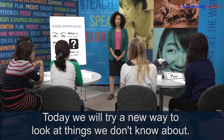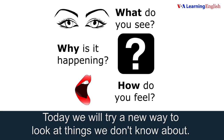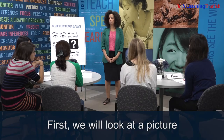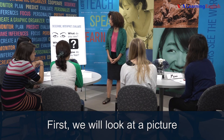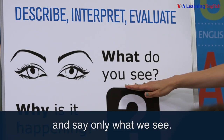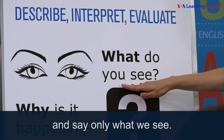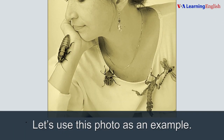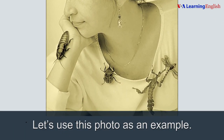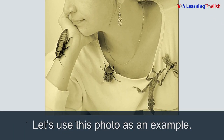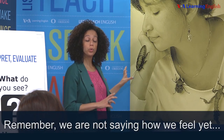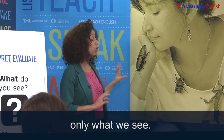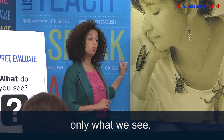Today we will try a new way to look at things we don't know about. First, we will look at a picture and say only what we see. Let's use this photo as an example. Remember, we are not saying how we feel yet — only what we see.